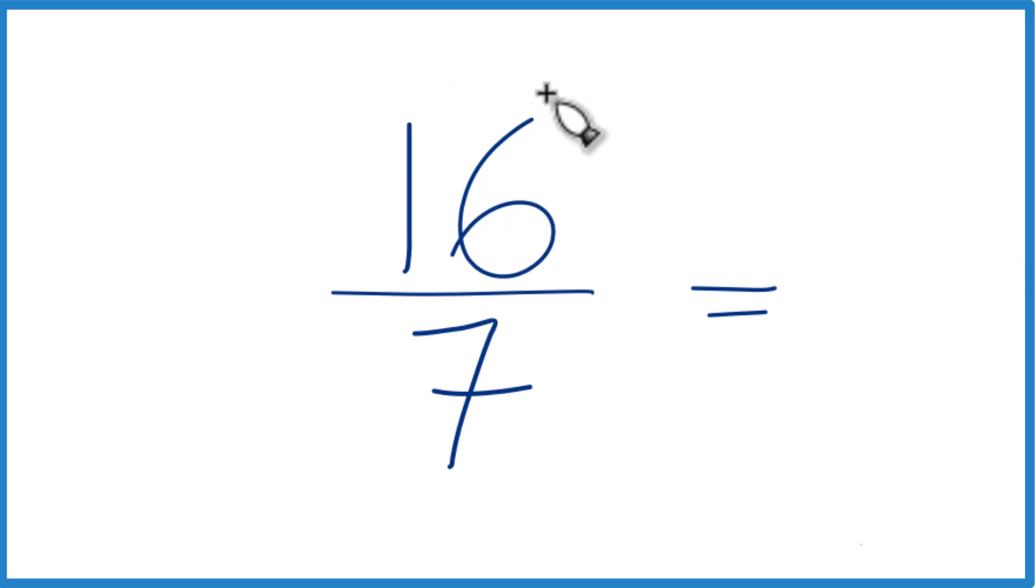We could try to simplify this at first, but it's already simplified. That's because the only number going into 16 and 7 evenly is 1. That's the common factor. So we can't simplify or reduce this any further, but we can change it to a mixed number.